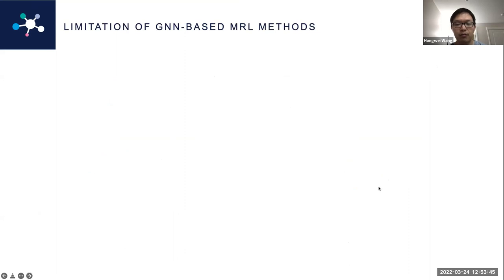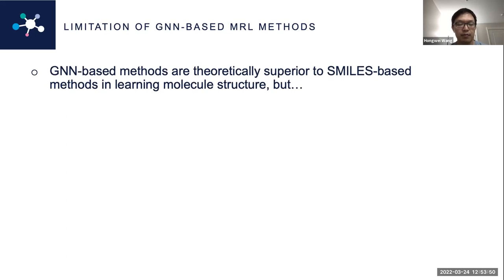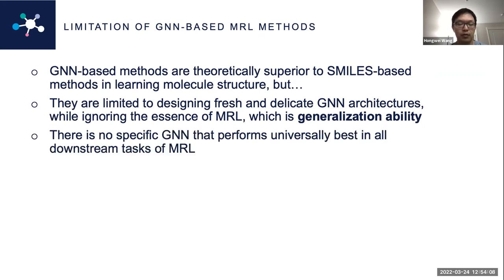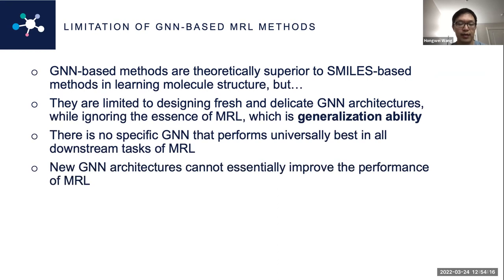Is there any limitation on existing GNN-based methods? Yes. Although GNN-based methods are theoretically superior to SMILES-based methods in learning molecule structure, they are limited to designing new GNN architectures while ignoring the essence of MRL, which is generalization ability. There is no specific GNN architecture that performs universally best across all downstream tasks. This inspires us to explore beyond GNN architectures.